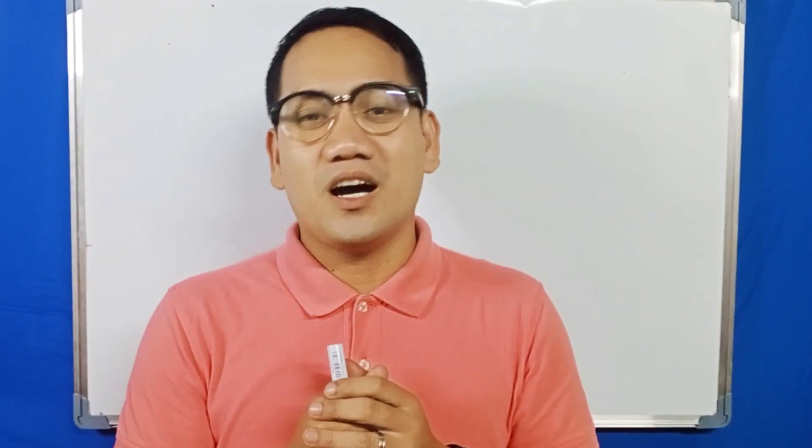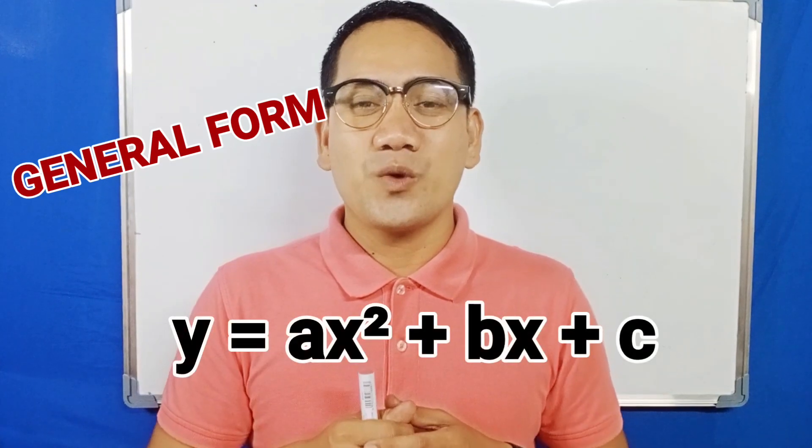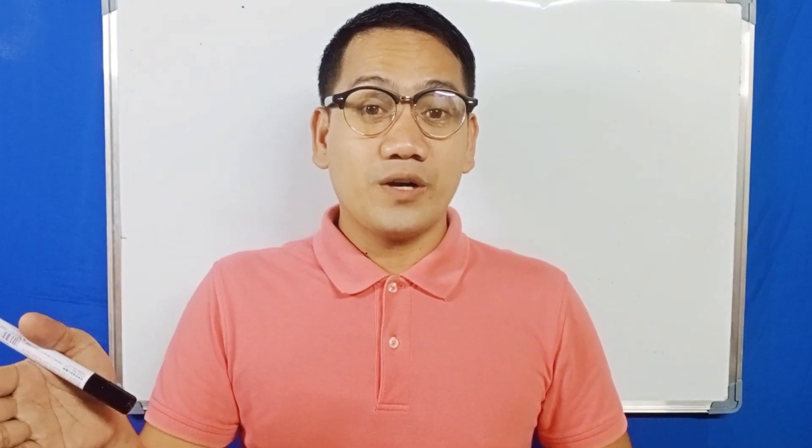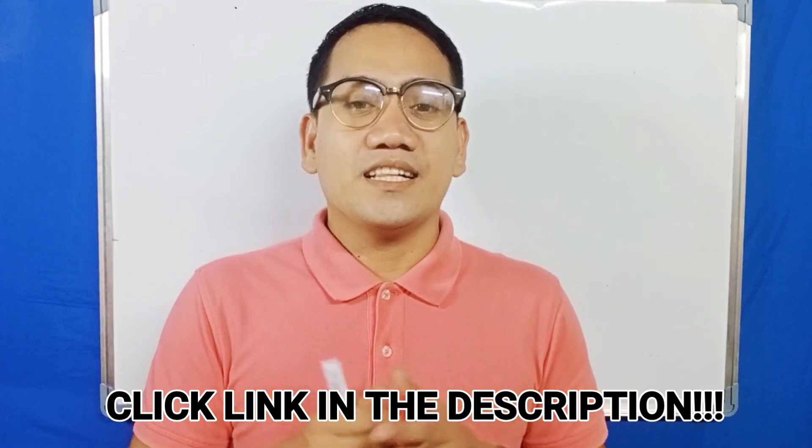Alright, dear Math Barres, as mentioned, today we will learn how to transform the standard form or vertex form of a quadratic function into the general form y equals ax squared plus bx plus c. In our previous video, we learned how to transform the general form into vertex form — you can click the link in our description for that topic. So this time, we'll do it the other way and simply transform vertex form into general form.